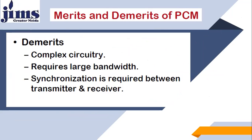The demerits: the circuit is complex because many sub-circuits are required at the transmitter and receiver sides — you require a sampler, regenerator, decoder, encoder, reconstruction filter, and low-pass filter. PCM requires a large bandwidth, which is a very high requirement. Synchronization is also required between the transmitter and receiver.